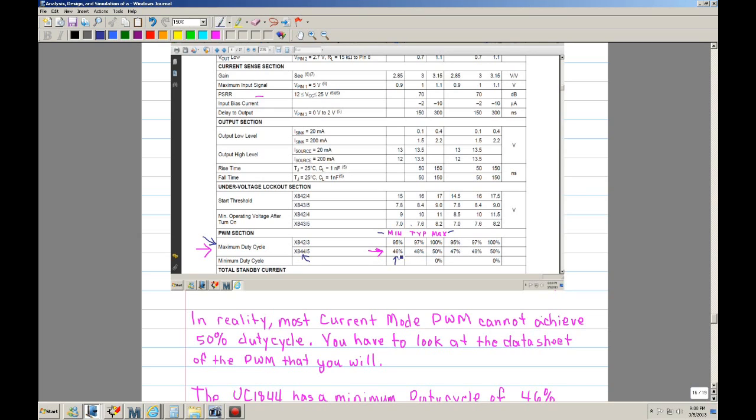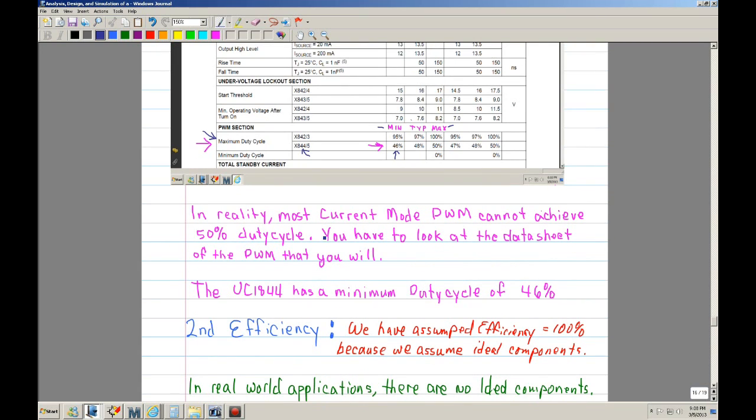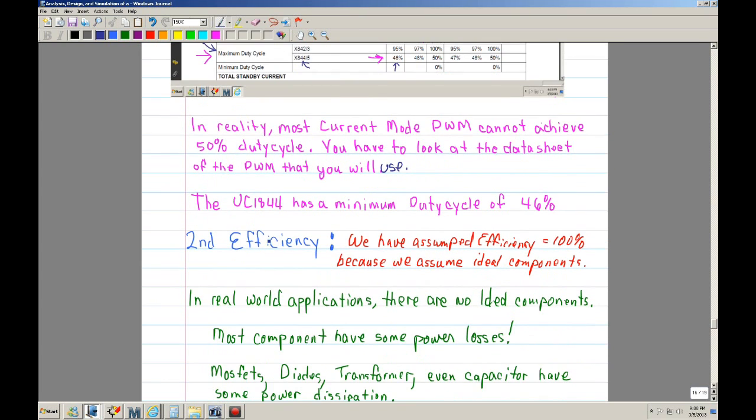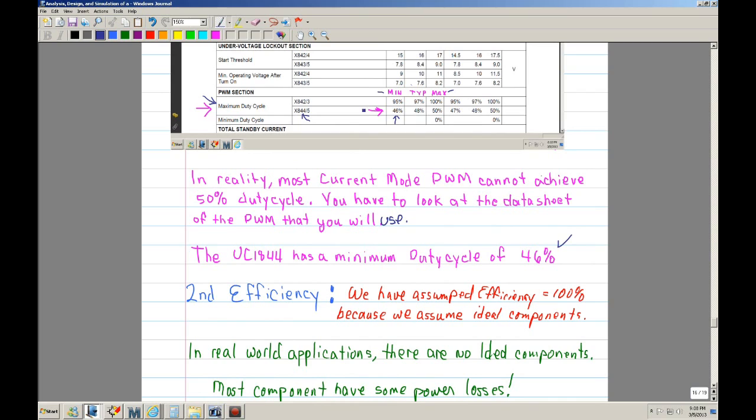So in this case, the PWM can vary anywhere from 46% to 50%. But if you're going to do a worst case design, this is the number that you want to use. Basically, in reality, most current modes cannot achieve 50%. You have to look at the data sheet of the PWM that you will use. In this case, the UC 1844 has minimum duty cycle 46%. So in this example, I will use 46%.